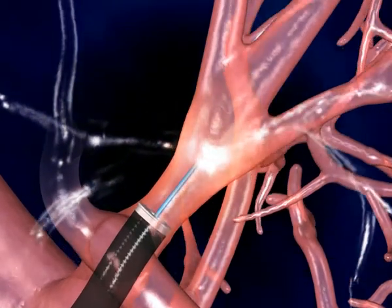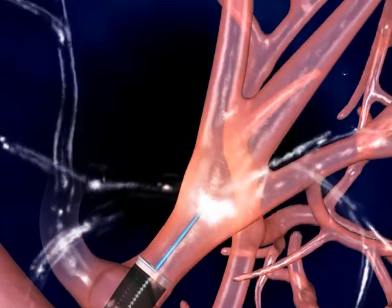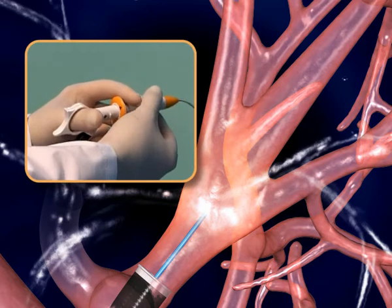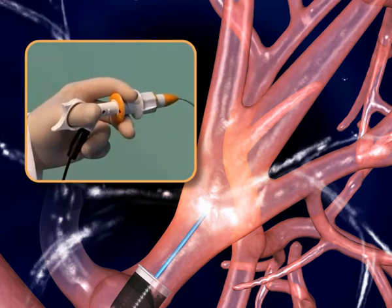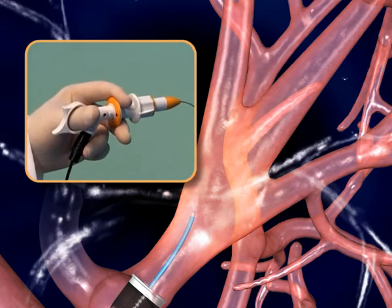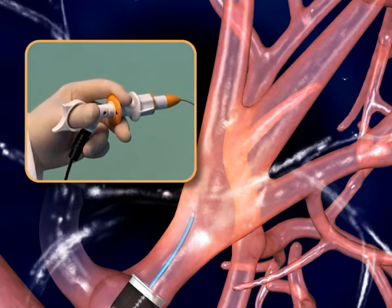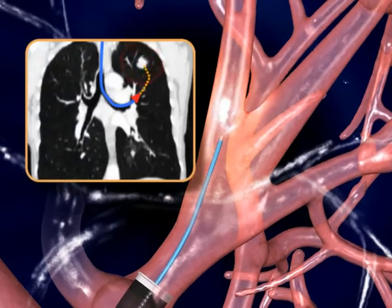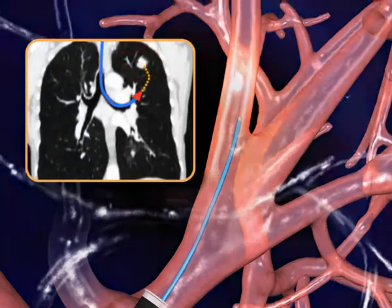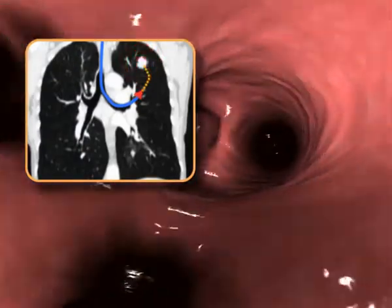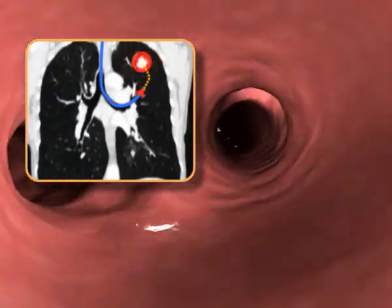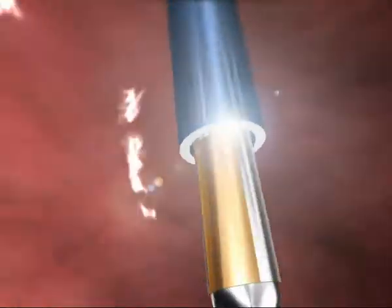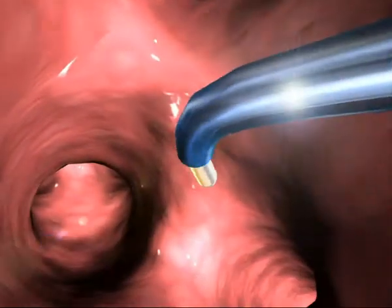When the bronchoscope cannot proceed anymore, the steerable navigation and guide catheters are advanced and steered by turning and pulling the dial on the catheter handle. The location and steering directions are performed according to the sensor's position on the CT roadmap relative to the target, which was previously registered to the patient's lung.